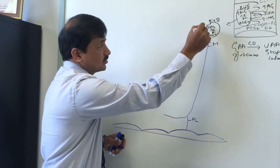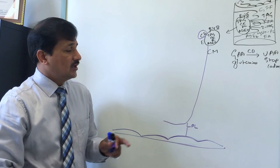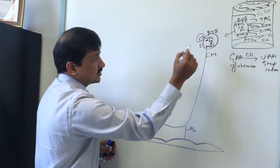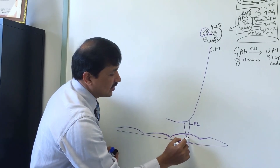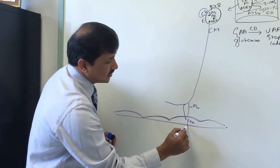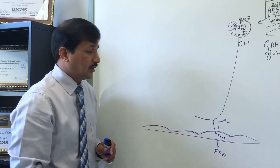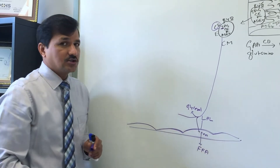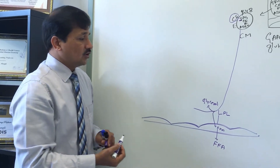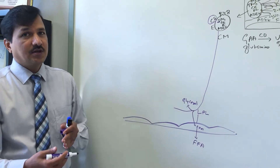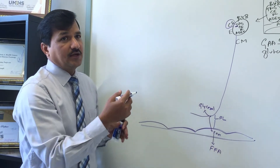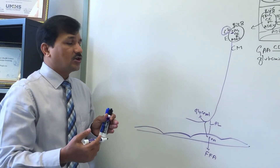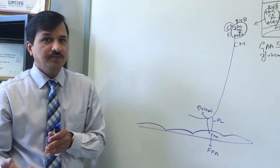ApoC2 activates lipoprotein lipase, which breaks down the triacylglycerol in the chylomicron, releasing free fatty acids and glycerol. Free fatty acids are taken up by peripheral tissues for their needs, such as membrane formation. Glycerol is returned to the liver.